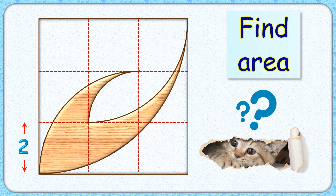Welcome everyone to this interesting question. Given is a square with side length 6 centimeters which is divided into 9 small squares of side length 2 centimeters each. This brown figure is made from the arcs of four different quadrants.